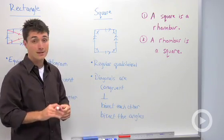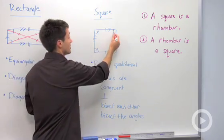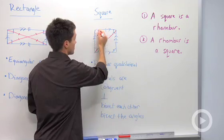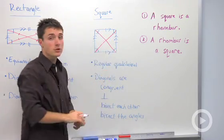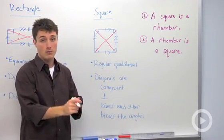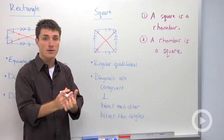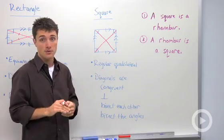But the other key things are that the diagonals are congruent. So basically a square is just putting together everything that you know about a parallelogram, a rhombus, and a rectangle. It's just smushing them all together and the square has all those properties.